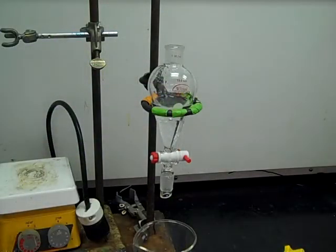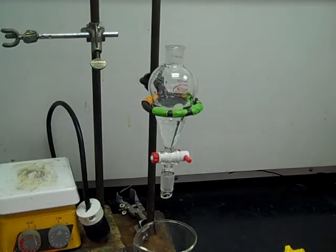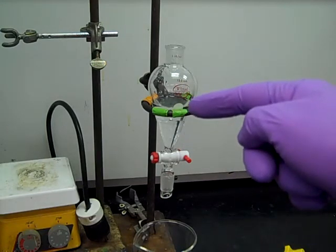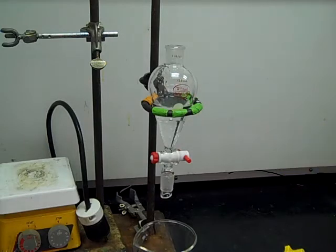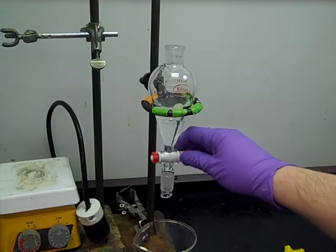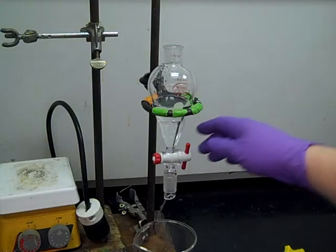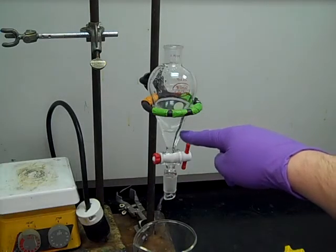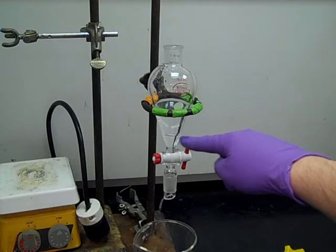All right, so now we're going to separate our two layers. We've got a new beaker down beneath, and then we've got our organic bottom layer, aqueous top layer. So by opening up the stopcock, we're going to release that bottom layer. See how I've got the separatory funnel in a ring stand. So you can notice that bottom layer dropping further and further, the interface line.